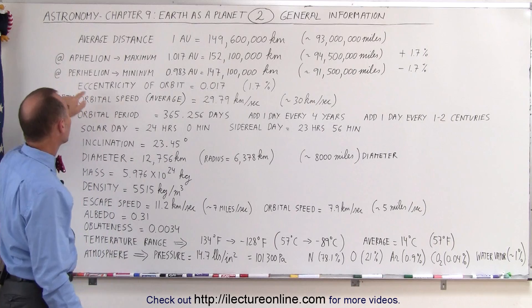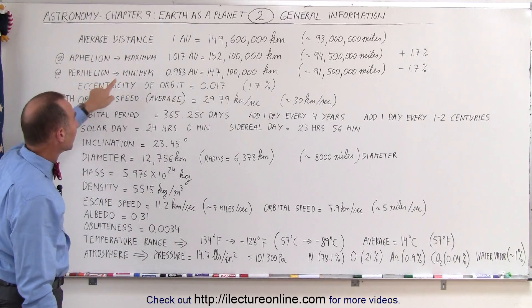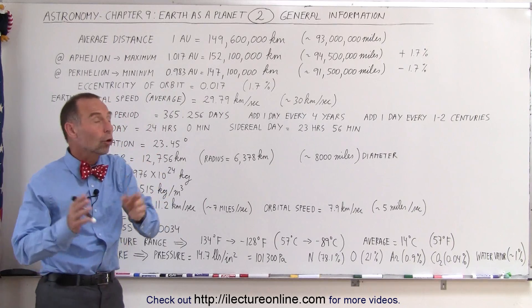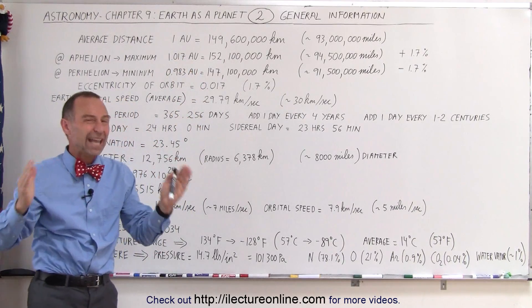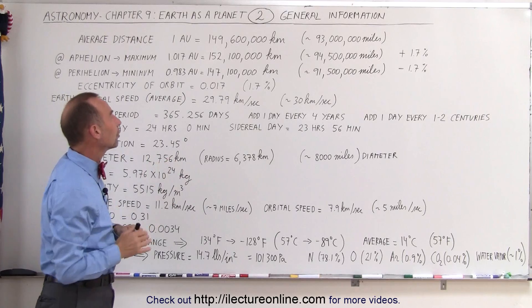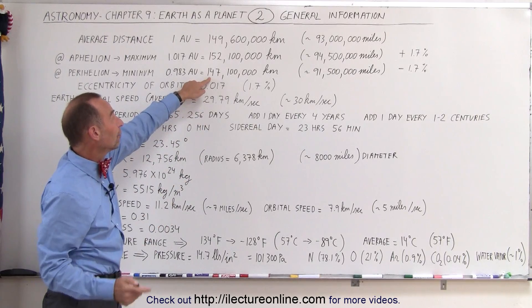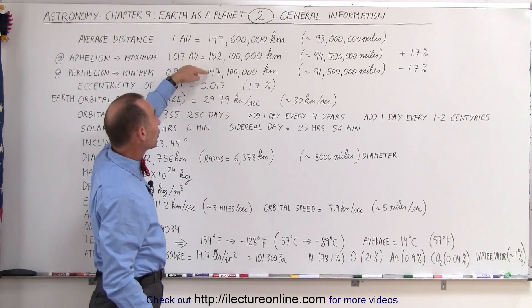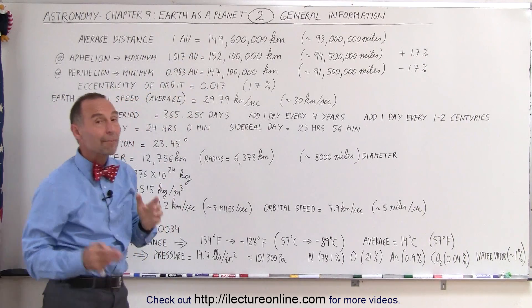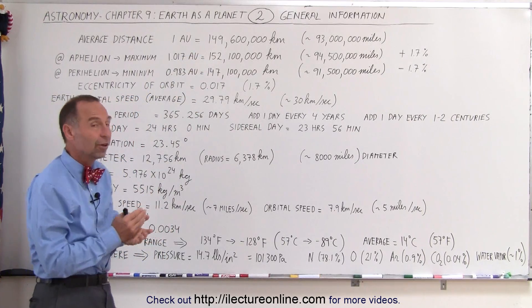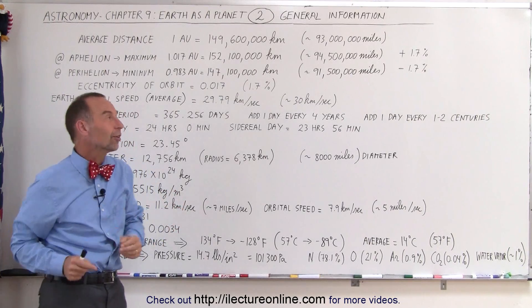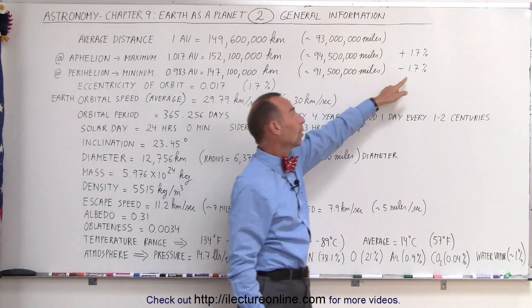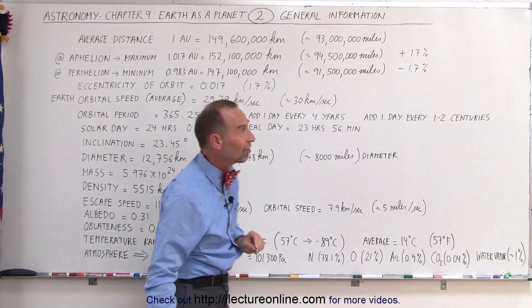Notice that's one and a half million miles more than its average distance or a difference of about 1.7%. And at its closest approach to the Sun, at perihelion, the minimum distance, about 0.983 astronomical units. Notice that an astronomical unit is known as the distance, the average distance between the Sun and the Earth. At that point, it's 147.1 million kilometers away.